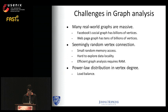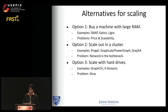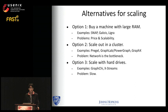There are several ways to scale graph analysis. The first option is to buy a machine with a lot of RAM, which is of course very expensive and has a scalability limit due to the amount of RAM installable in a single machine. The second option is to scale out in a cluster, which is very popular and used by many graph engines that process graphs in a distributed fashion.